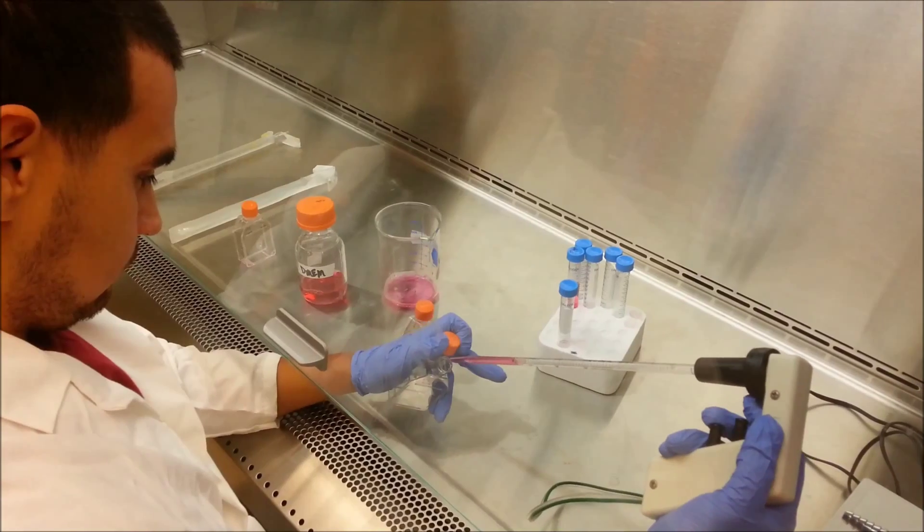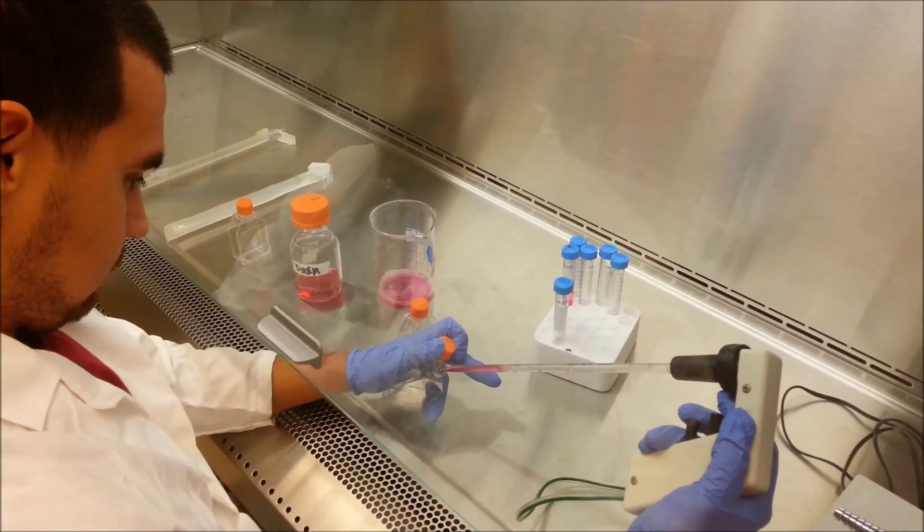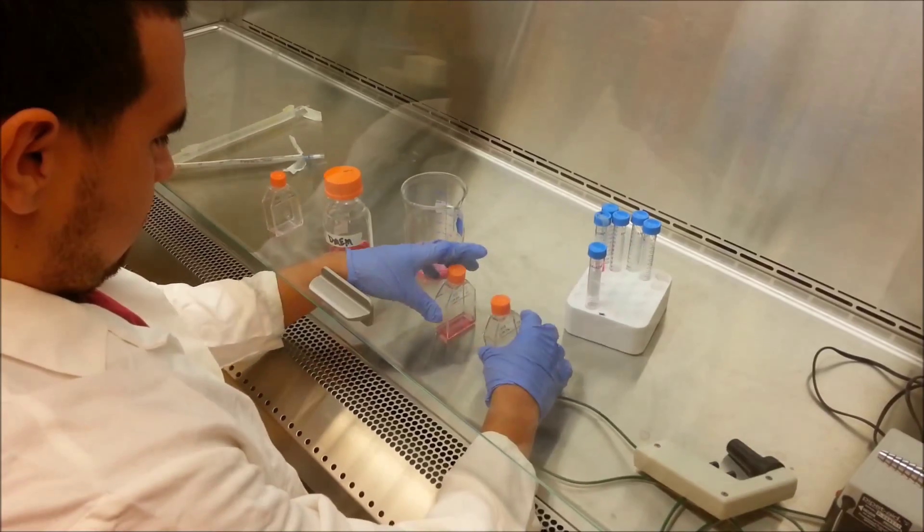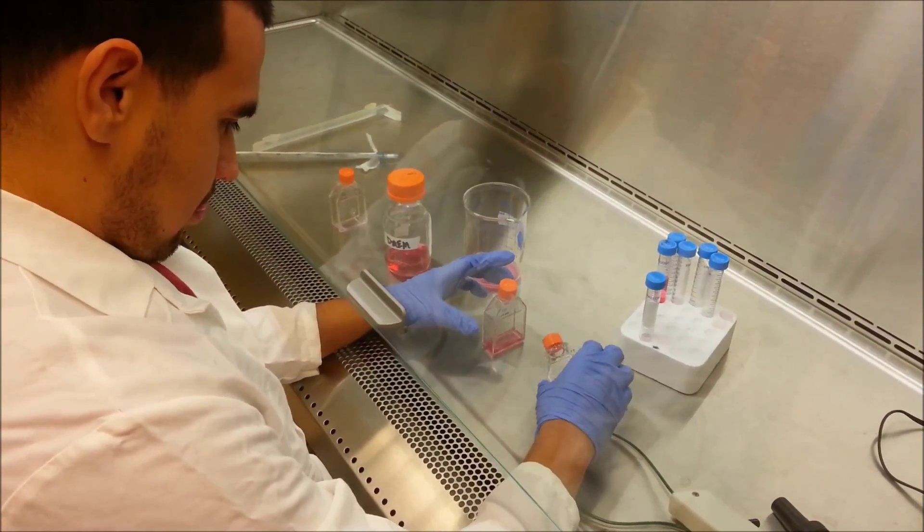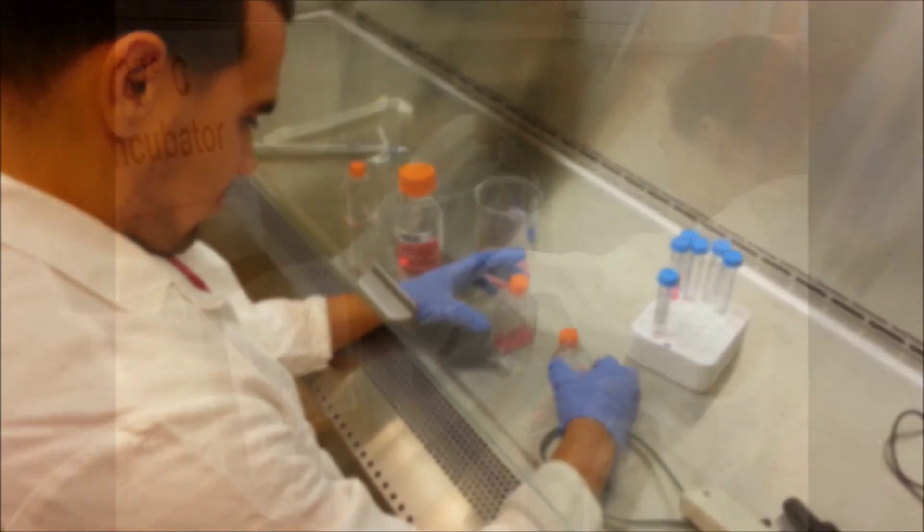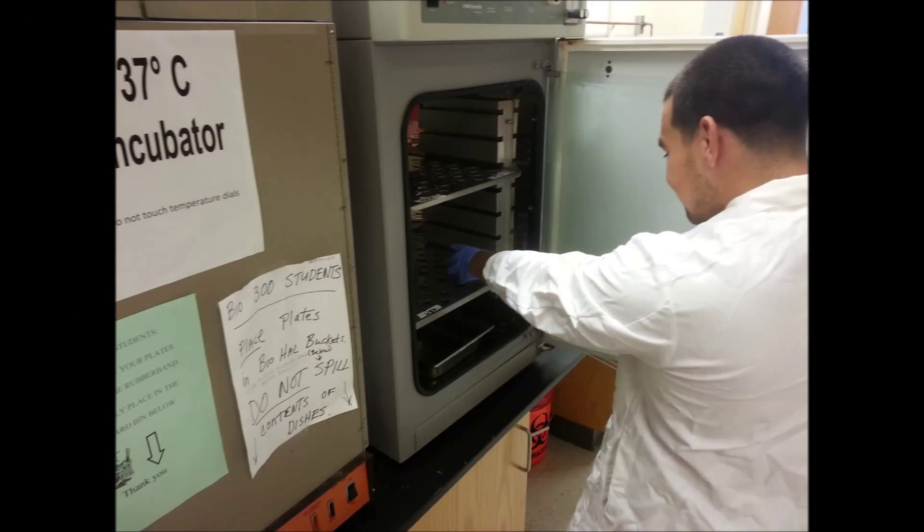Add 3.5 mL of the cell suspension to your T25 flasks. Rock them to ensure that the suspension covers the surface. Place your cells in the incubator.